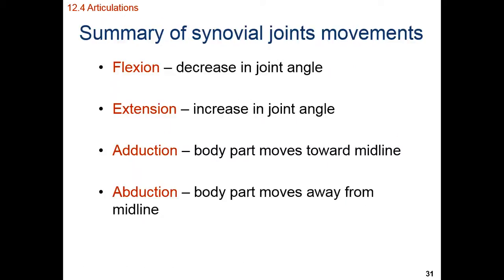Let's talk about how we can move the joints in our body. These are general motions, and I'm going to present them in terms of opposites. Flexion and extension — you can think of flexing your elbow to make your biceps look larger, or extending your elbow to make your triceps look larger. When we decrease the joint angle, we flex it; when we increase the joint angle, we extend it.